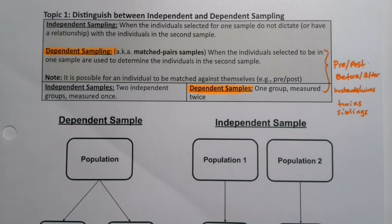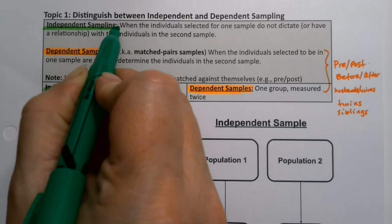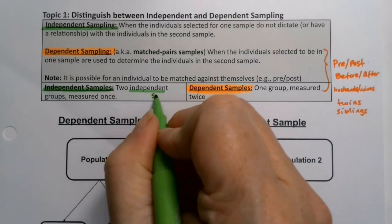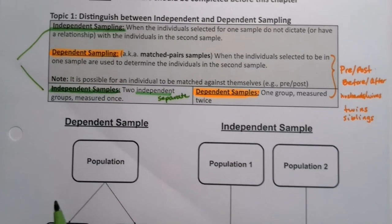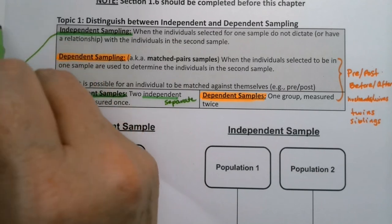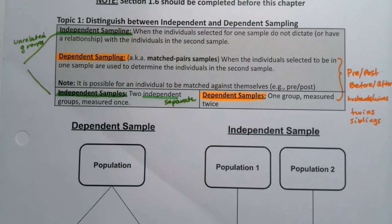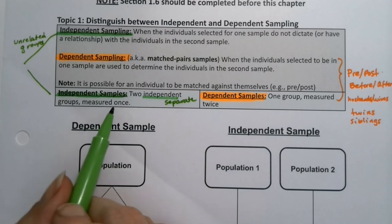Independent sampling is when you have two groups measured one time — two separate groups that don't have anything to do with each other. You could say 'separate' instead of 'independent.' So those are two separate groups measured once. It could be unrelated men and women, unrelated people in general — it doesn't make any difference, but it has to be two separate groups that have nothing to do with each other, measured one time.